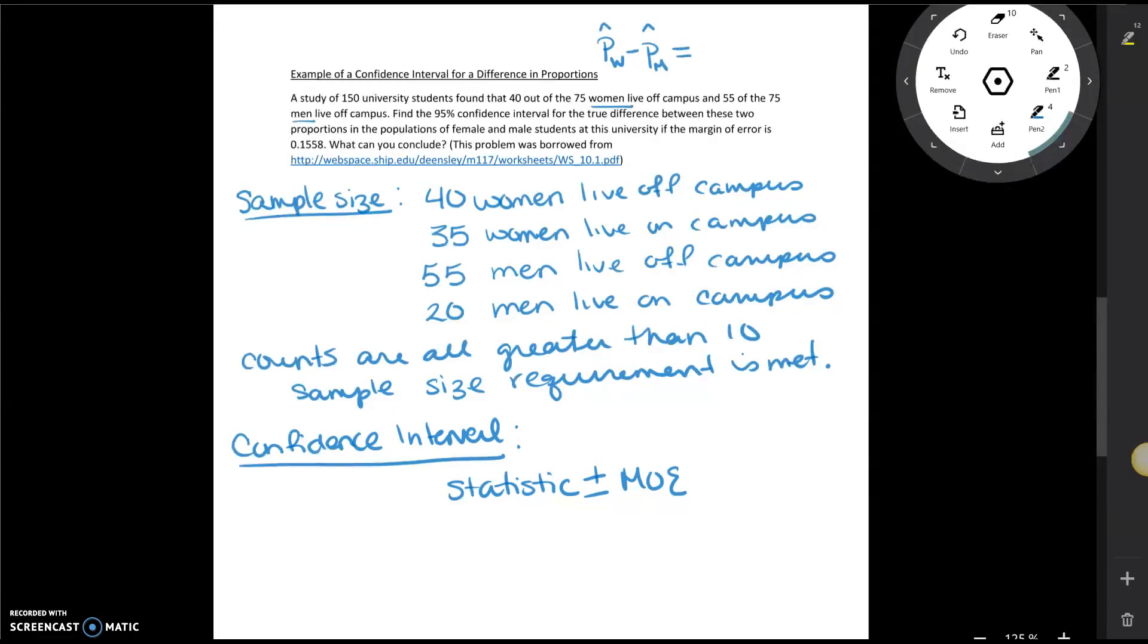And so notice from the women we had 40 out of the 75. And for the men we had 55 out of the 75. So that is the same thing as negative 15 divided by 75.